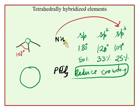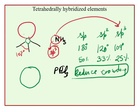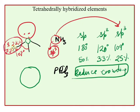The s and p orbitals of nitrogen mix to form sp3 hybridized orbitals. The lone pair orbital has approximately 31% s character, while each bonding orbital has approximately 23% s character — meaning 77% p character. This s and p mixing, i.e., hybridization, gives a bond angle of 107° in NH3.